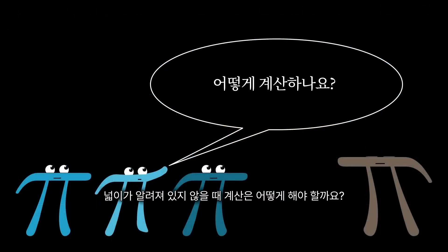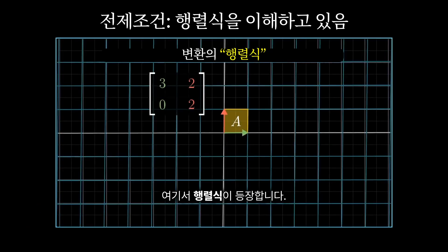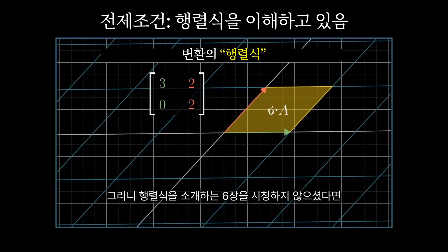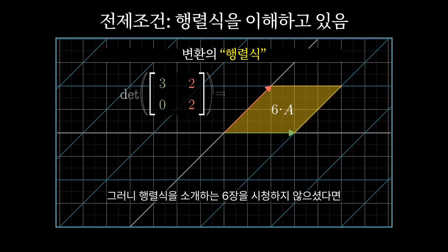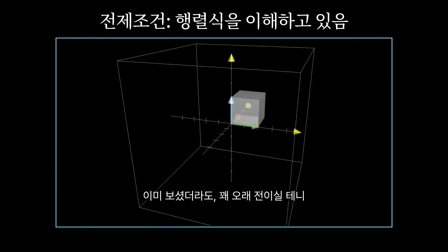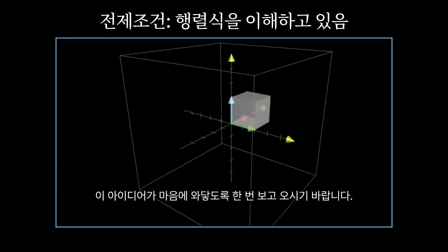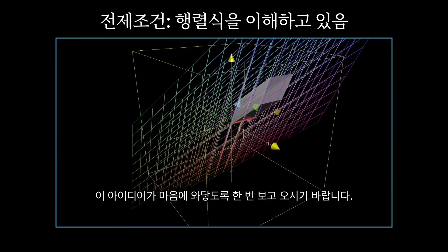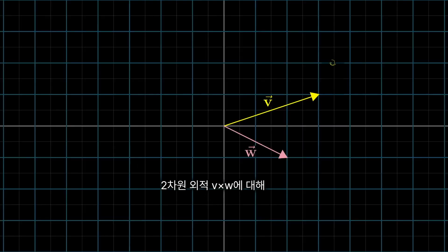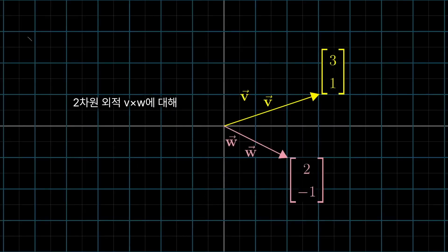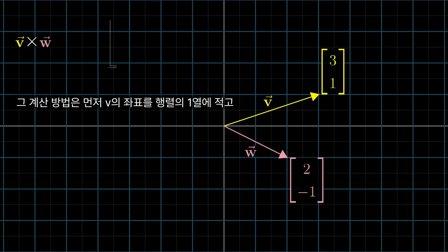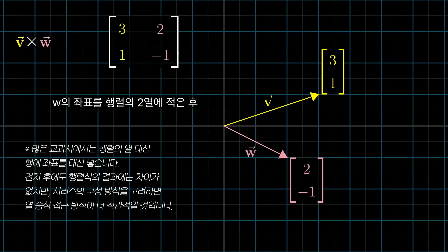But of course, you want to be able to compute this without someone telling you the area. This is where the determinant comes in. So if you didn't see chapter 5 of this series where I talk about the determinant, now would be a really good time to go take a look. Even if you did see it but it was a while ago, I'd recommend taking another look just to make sure those ideas are fresh in your mind. For the 2D cross product, v cross w, what you do is write the coordinates of v as the first column of a matrix, take the coordinates of w and make them the second column, then compute the determinant.